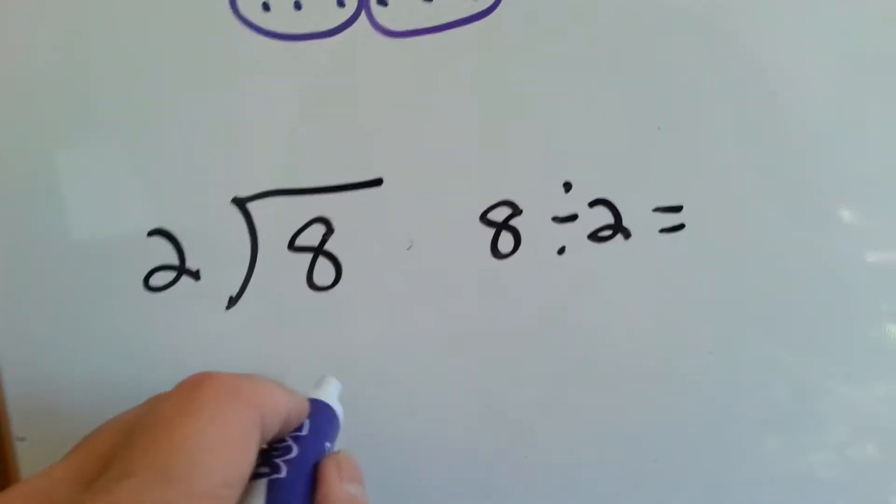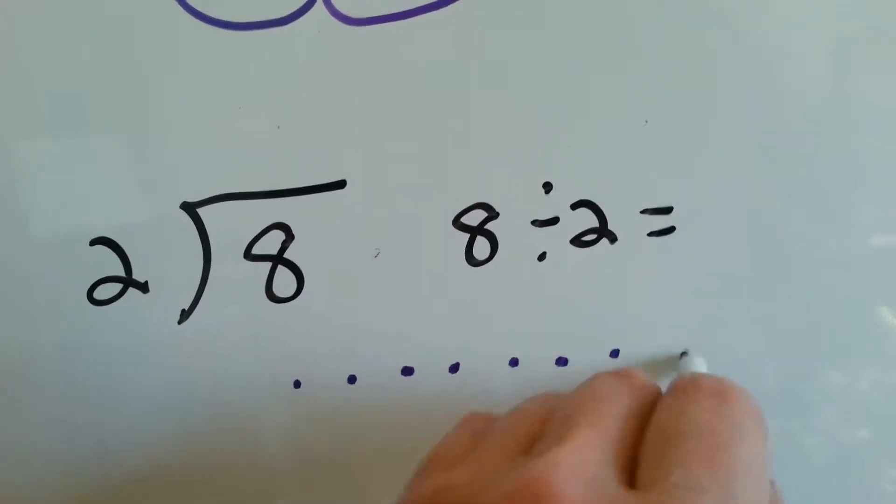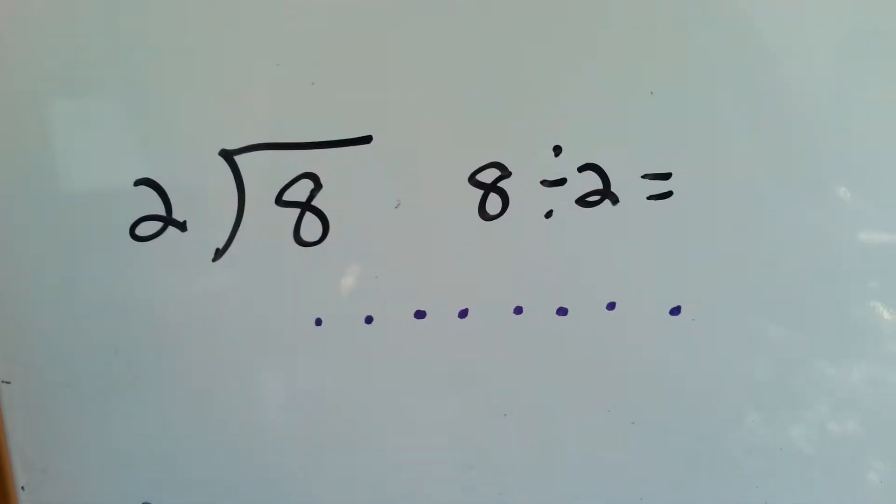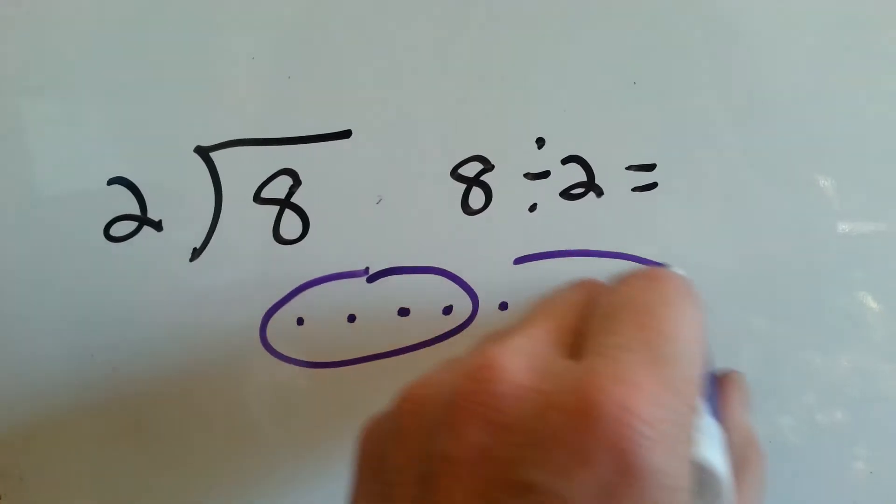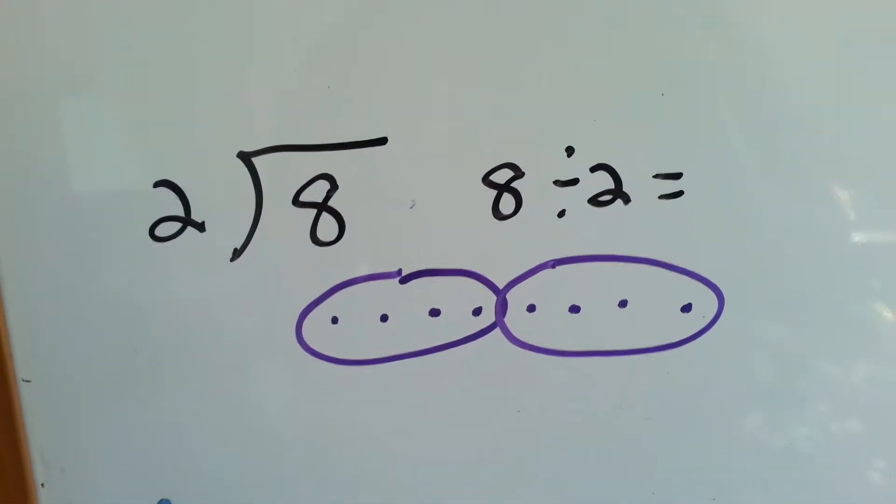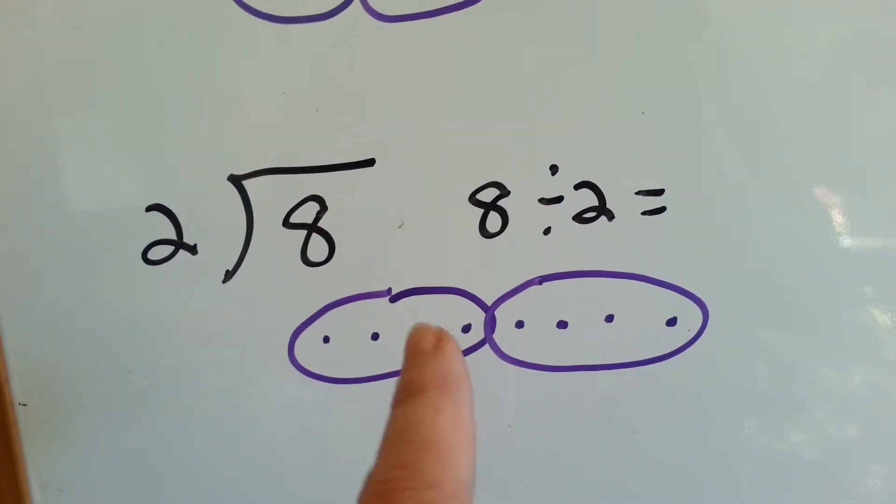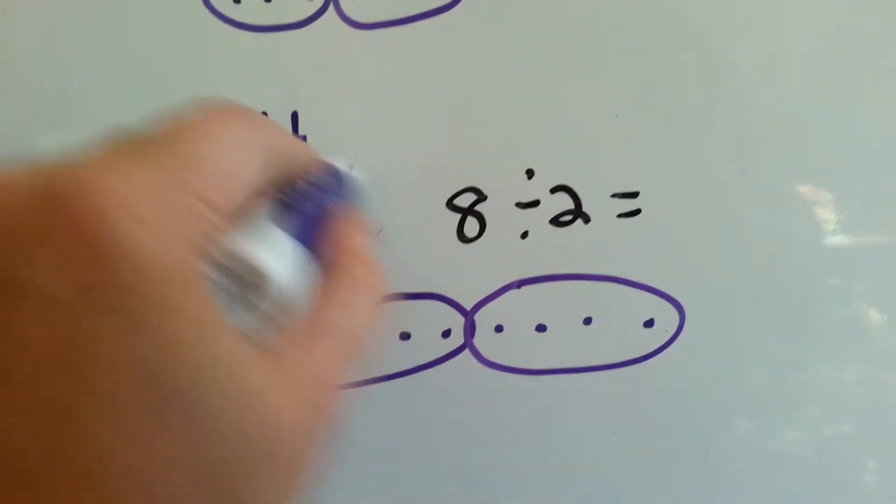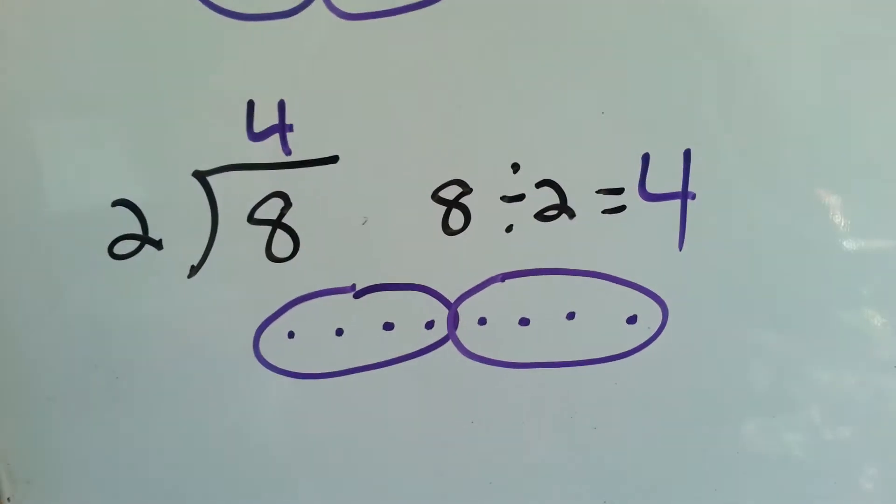How about this one? 1, 2, 3, 4, 5, 6, 7, 8. We need 2 groups. How many are in each group? 1, 2, 3, 4. See?